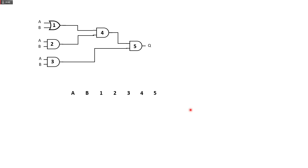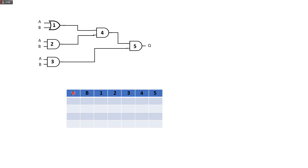Next, we are going to determine the possible inputs. So 0 and 0, 0 and 1 — those are possible inputs for A and B. The possible input combinations are: 0 and 0, 0 and 1, 1 and 0, and just like this one — if that's 0 and 0, this will be 1 and 1.